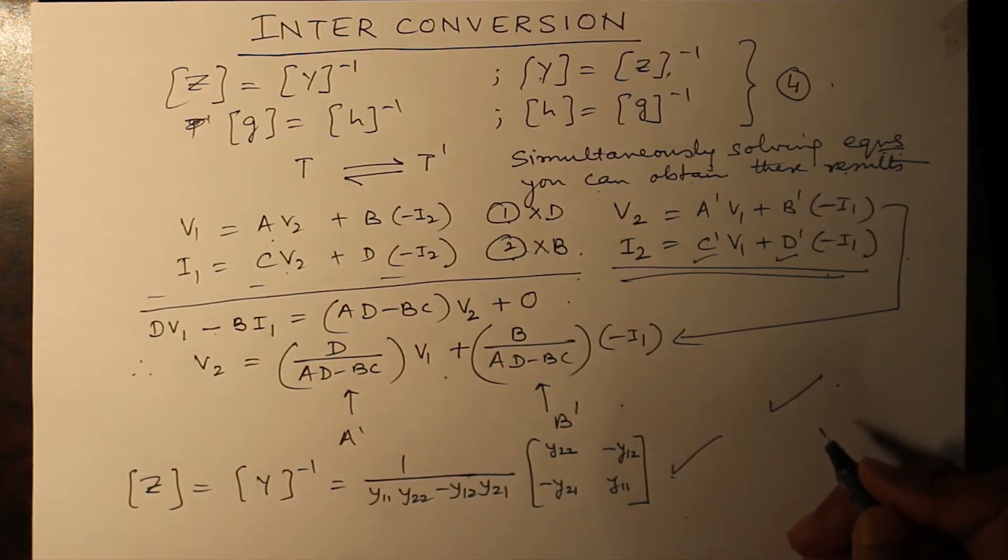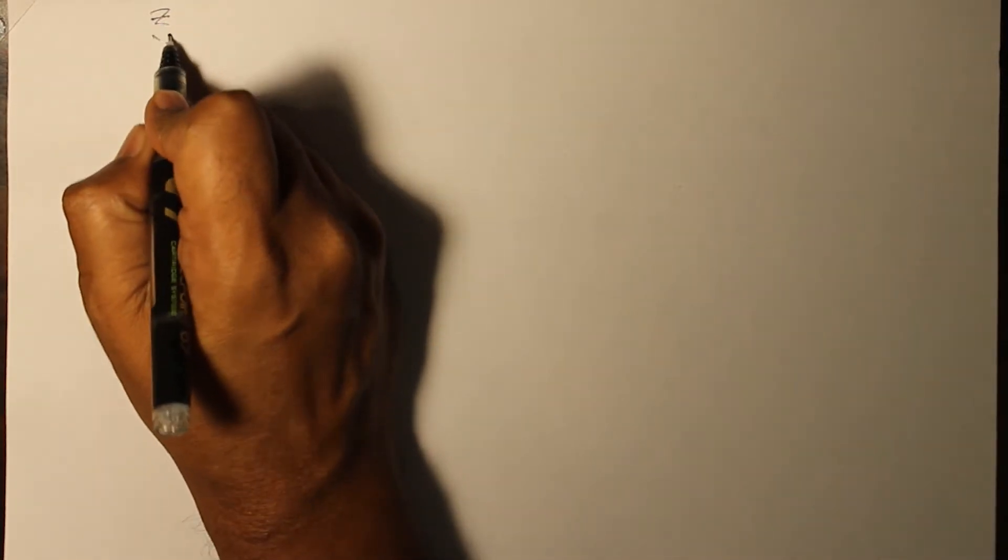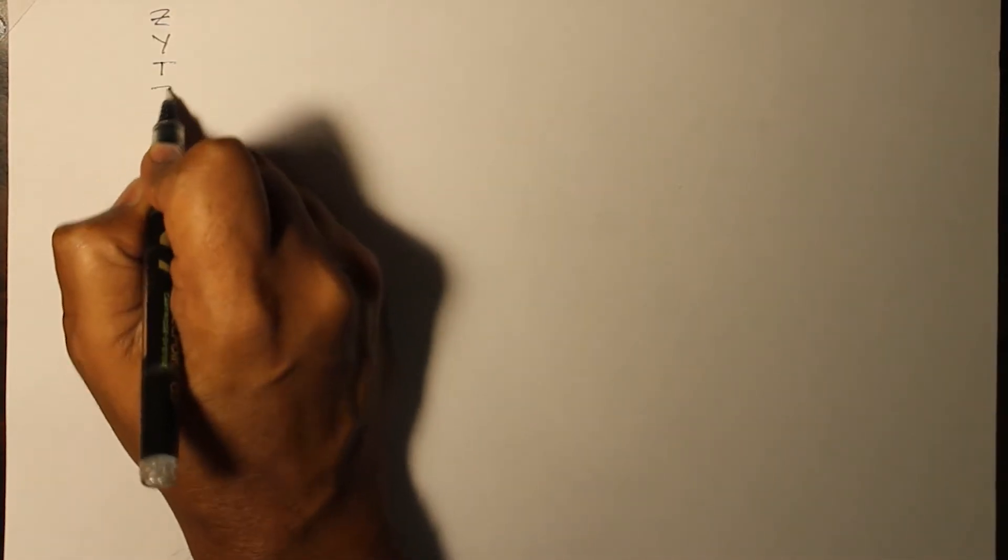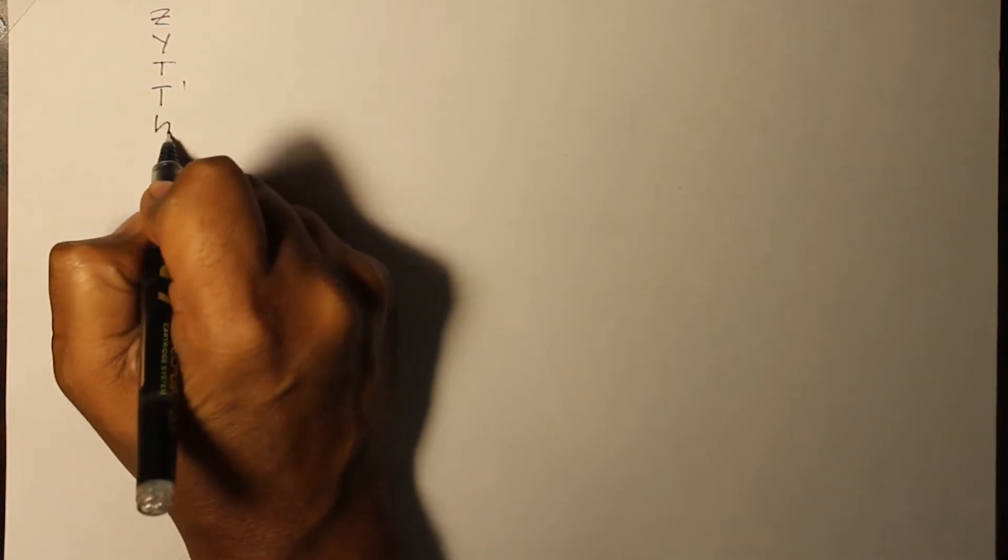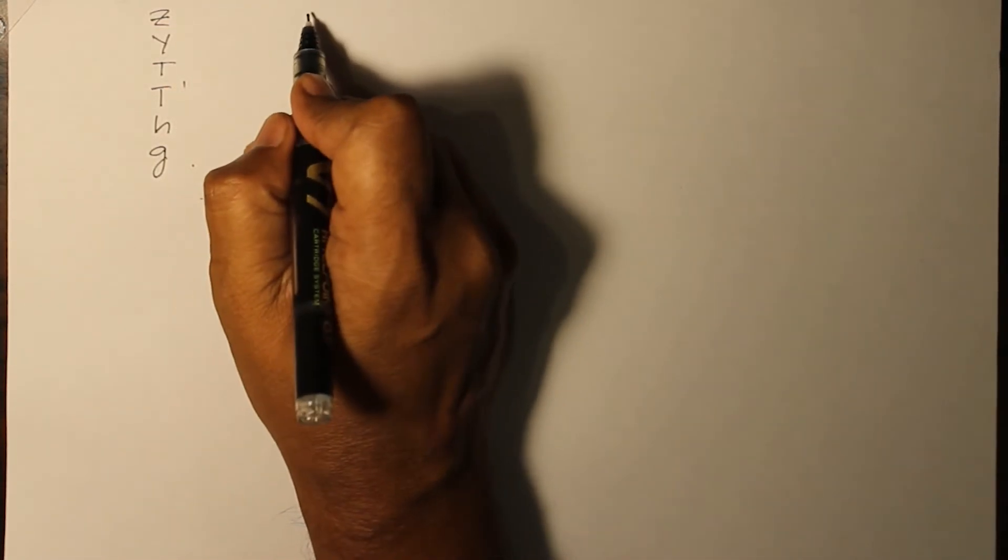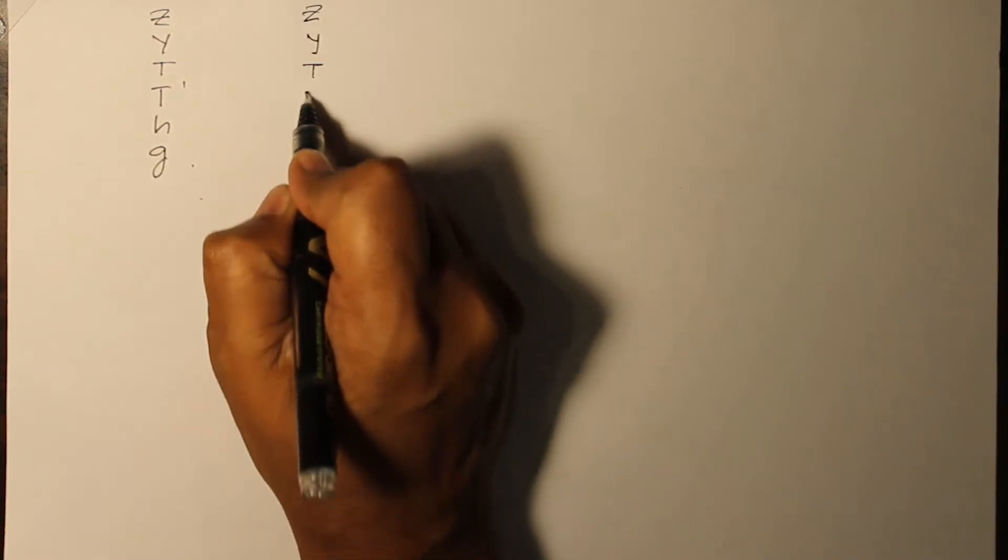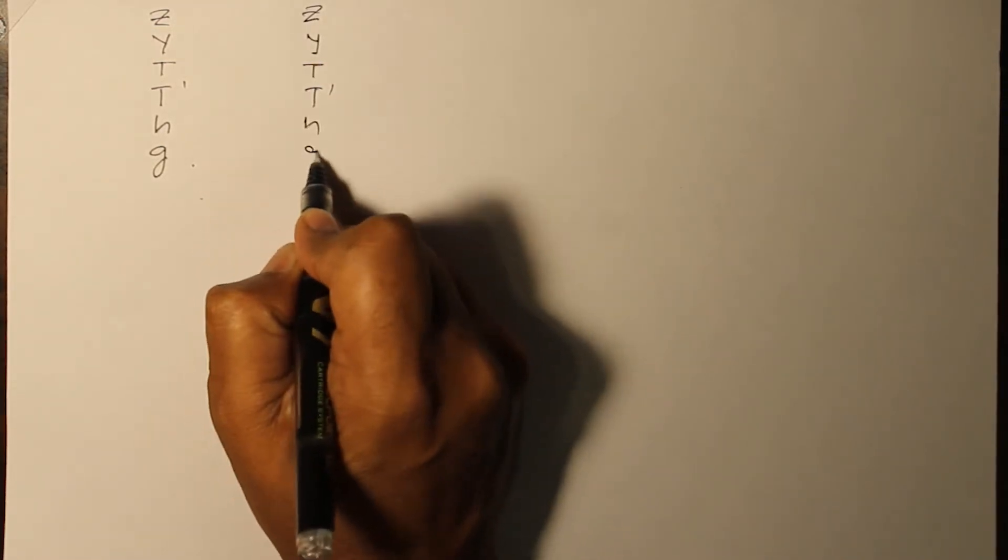So interconversion of six interconversions have been done so far. Now let's do the rest of the interconversions, 24 interconversions, in the next time. Continuing with the interconversion, now you have Z, Y, T, T dash, H, and G to be converted into again Z, Y, T, T dash, H, and G.